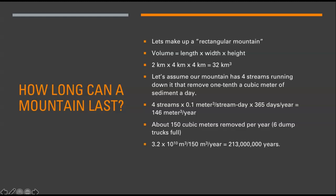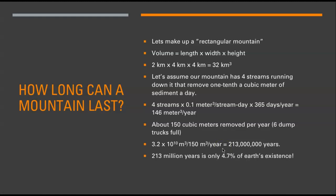If I take 3.2 times 10 to the 10 — that's just 32 kilometers cubed rounded down into exponents — and divide it by 150 cubic meters removed per year, it will take 213 million years to remove our mountain. But 213 million years is only 4.7% of the entire time that Earth has been around. Earth has been around for 4.5 to 4.6 billion years. That gives you an idea of the difference between a million and a billion.